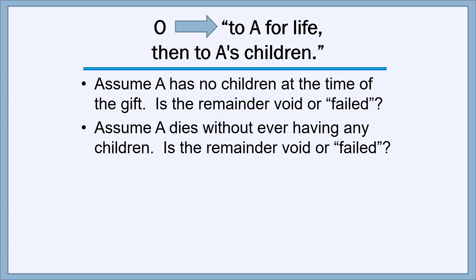Suppose A dies without ever having any children. Is the remainder void or failed? The answer is that it's failed — there won't ever be any people who fit the definition of A's children, and therefore the remainder has failed. By the way, if A is male, we do need to wait nine months after A's death to find out if A has any posthumous children. If there are any, they qualify and can take the remainder.